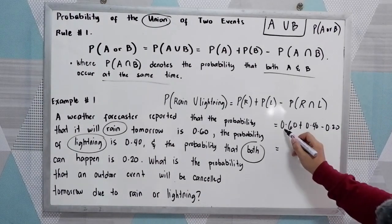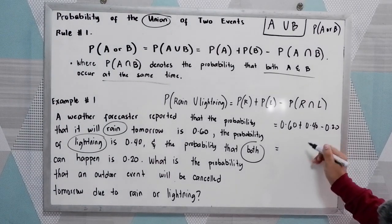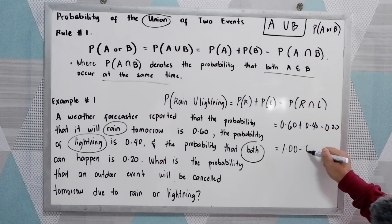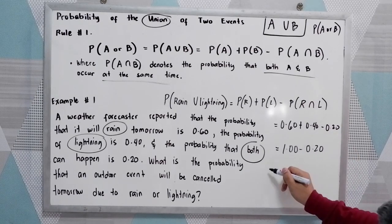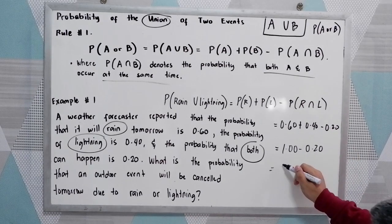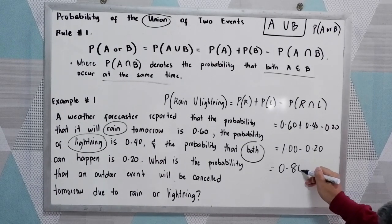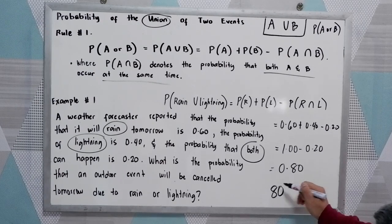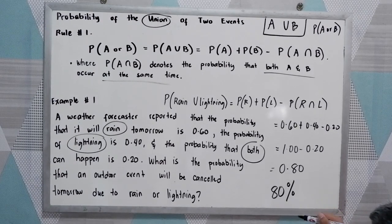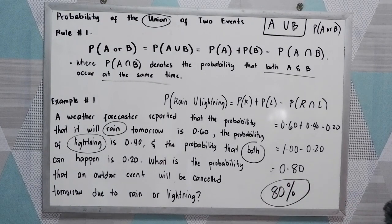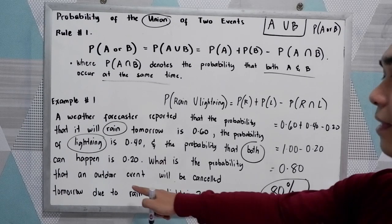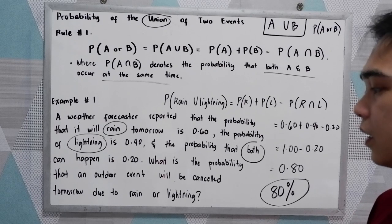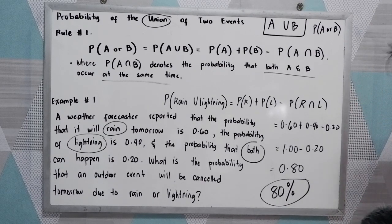We have 0.60 plus 0.40, which equals 1.00, minus 0.20. So 1 minus 0.20 is 0.80. In percent form, multiply by 100, that is 80%. So the probability that an outdoor event will be cancelled tomorrow is 80%.